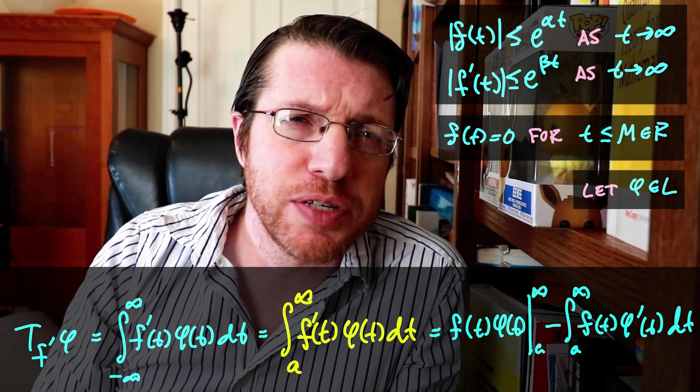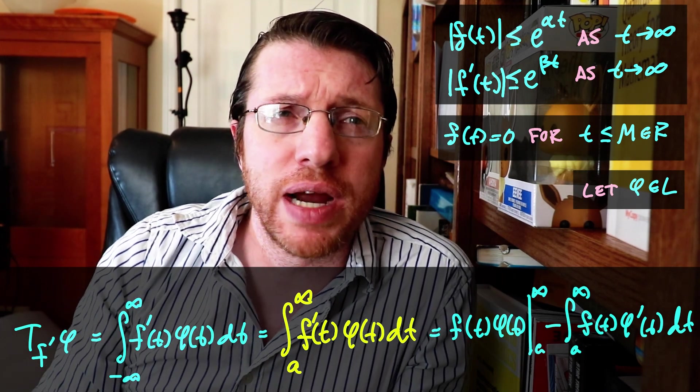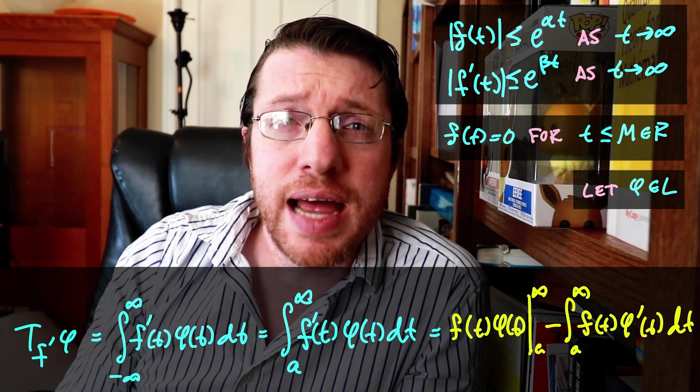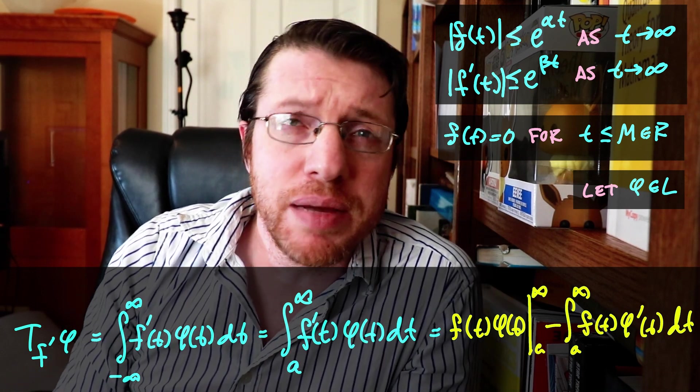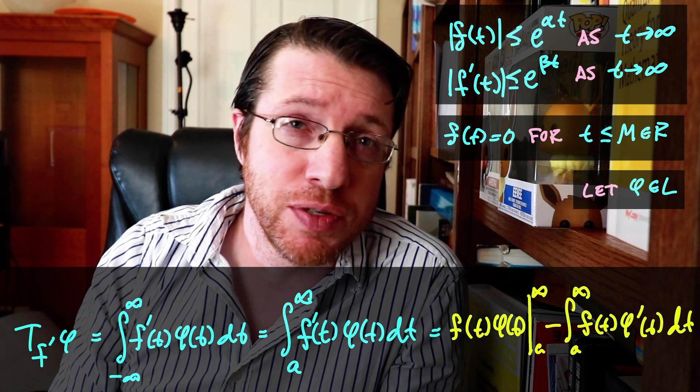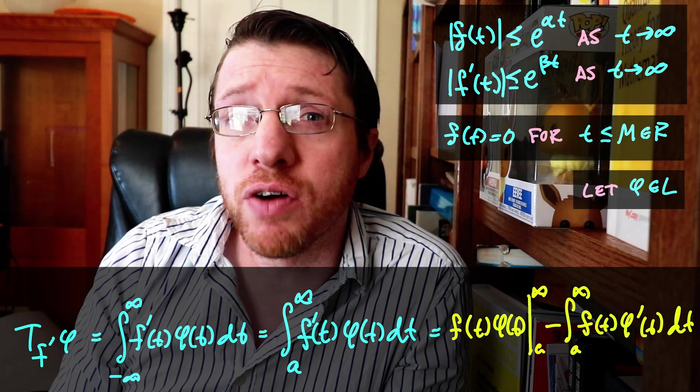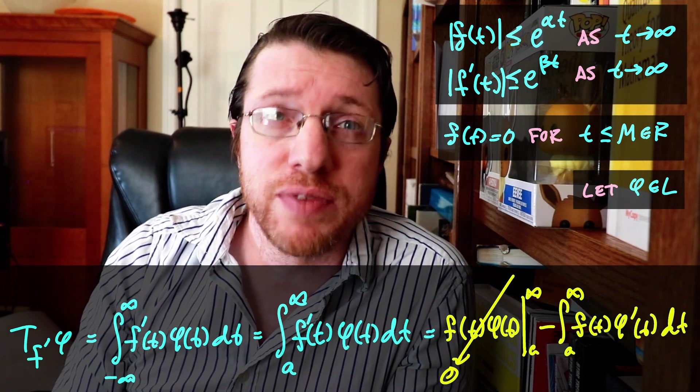Now let's use the integration by parts formula, and by doing so we arrive at this formula. Since the support of f is m to infinity, that makes f of a equal to 0. And the limit as t goes to infinity of f times phi of t is also 0, since phi of t is in L and f is of exponential growth. Thus, we have this.